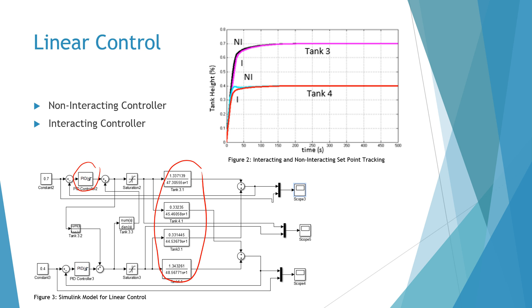We also used an interacting control system to control our linear model and created transfer functions using block diagram algebra for our feedforward transfer functions. As you can see from the graph, the interacting control system took a little longer to reach the set point but went up more smoothly.